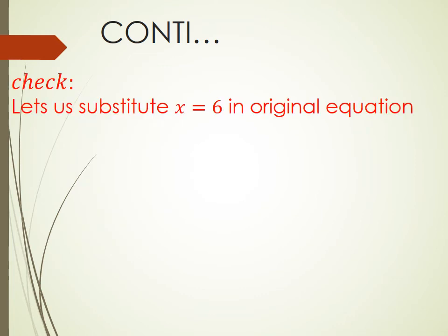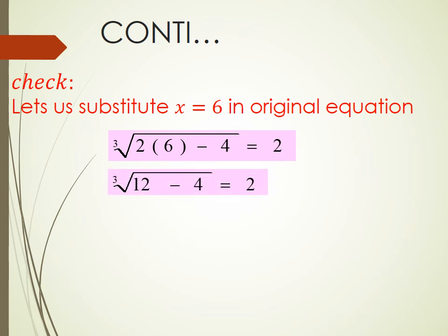Check for extraneous solution or extraneous value. We will substitute x equal to 6 in the original equation. We get cube root of 2 into 6 minus 4 equal to 2. After simplifying, we get cube root of 12 minus 4 equal to 2. Cube root of 8 equal to 2, and 8 is the cube of 2. 2 whole cube equal to 8. Cube root of 2 cube equal to 2. After cancelling the cube root with cube, we get 2 equal to 2.